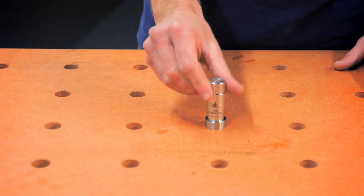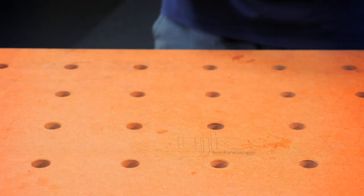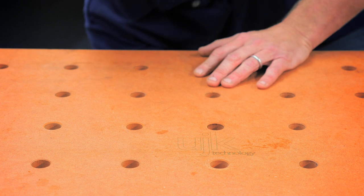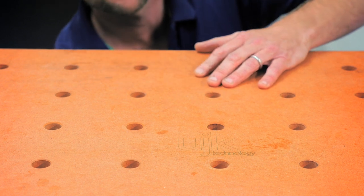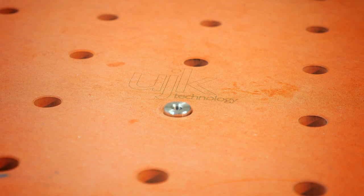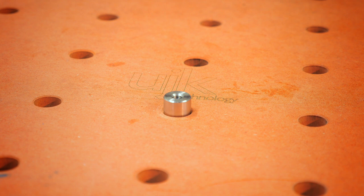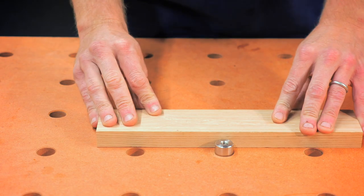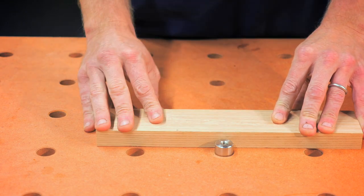The other use is we can come from underneath the table to create a low profile stop which locks from underneath. A nice low profile stop if you want it to butt against or work on the top.